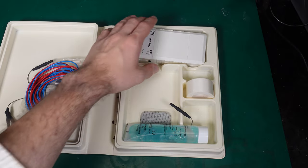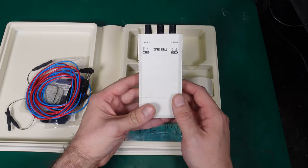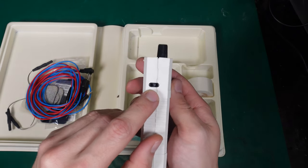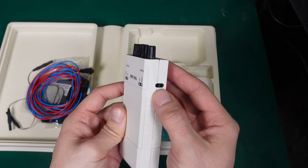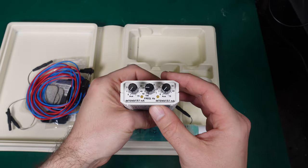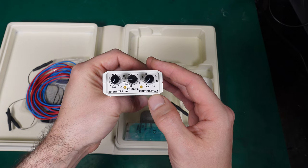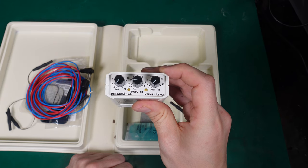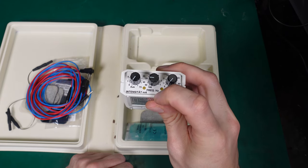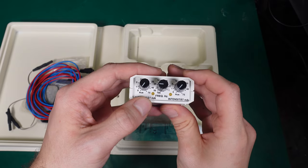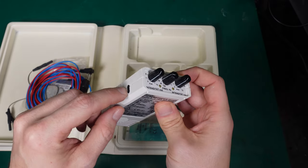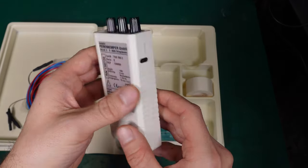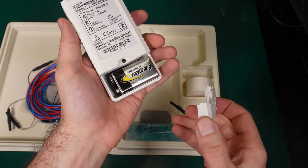This is the unit itself, so we've got two channels. We've got the adjustment, we can see we've got the milliamp intensity and it can go as high as 75 milliamps. We've got the frequency and the same adjustment for the another channel. It's powered from a 9-volt battery.